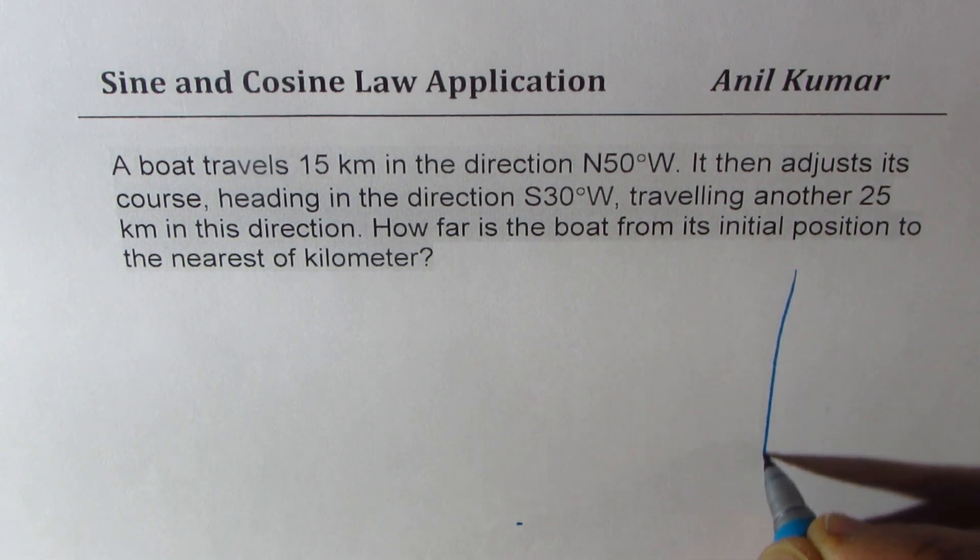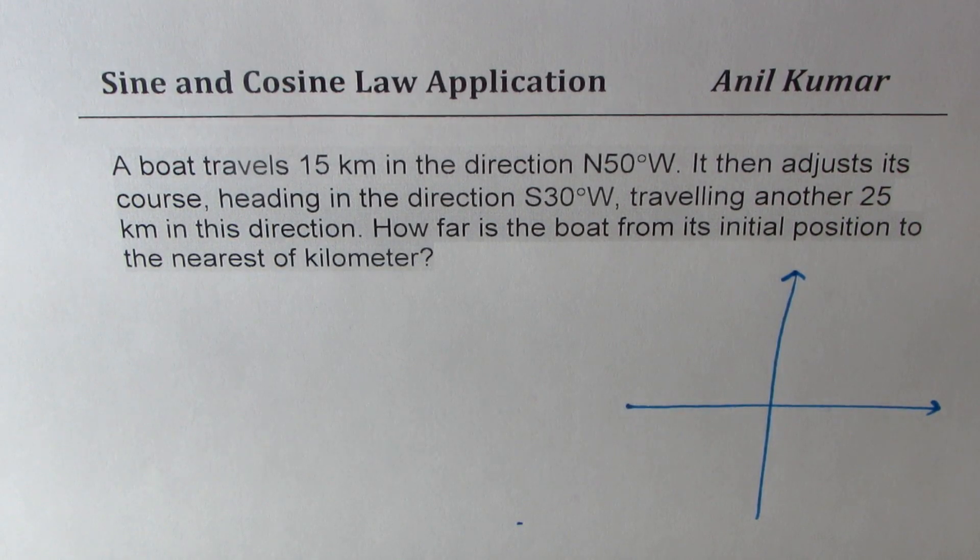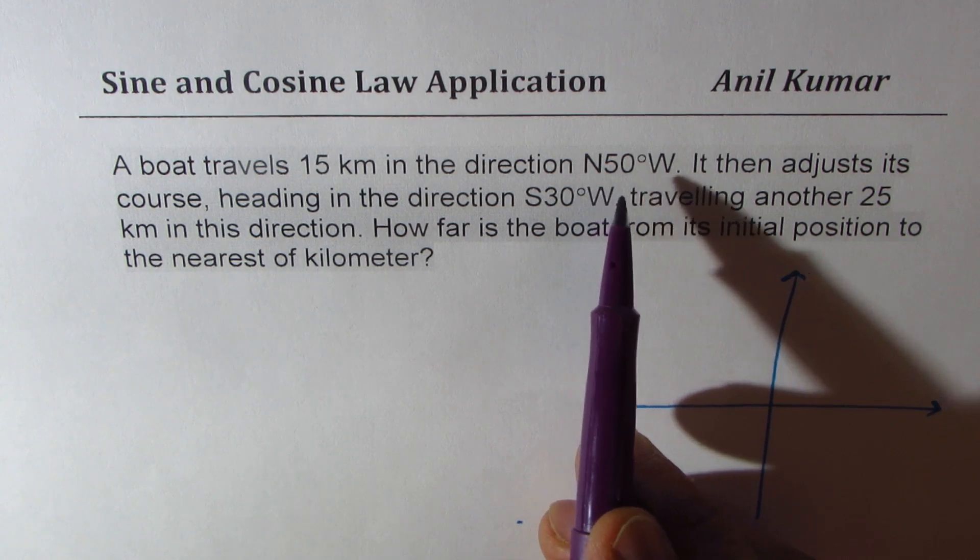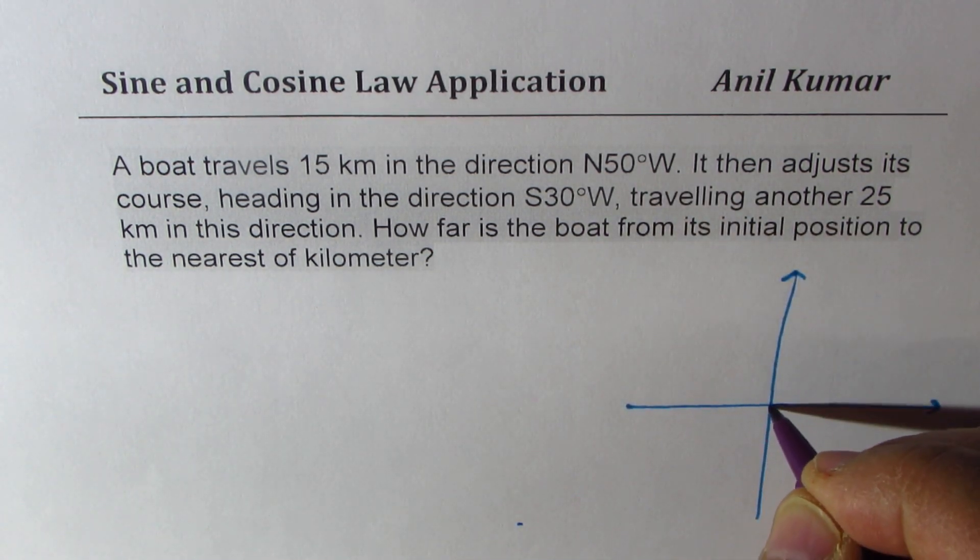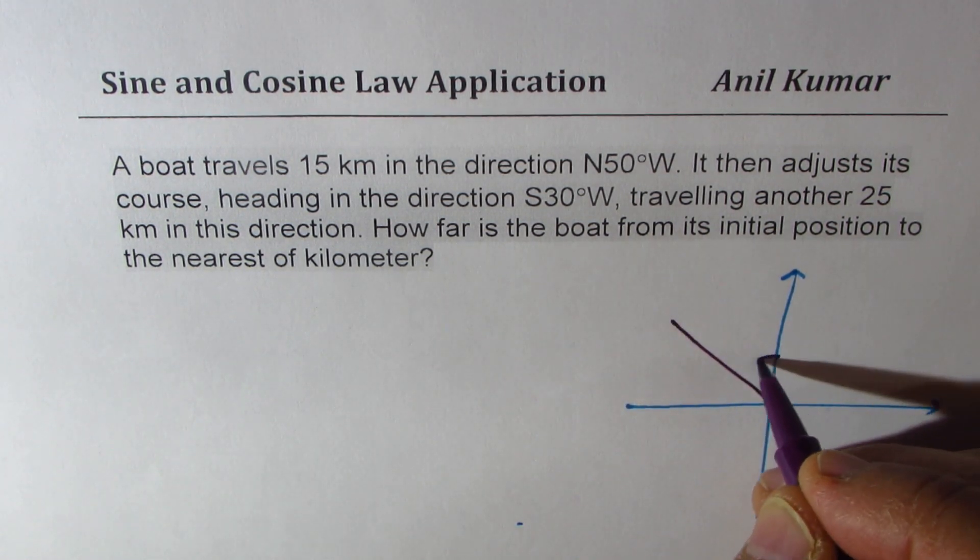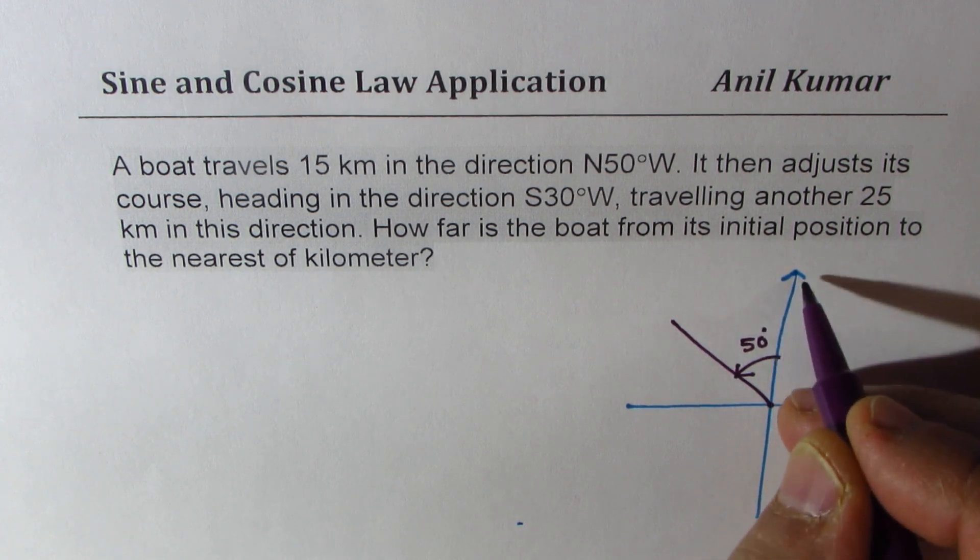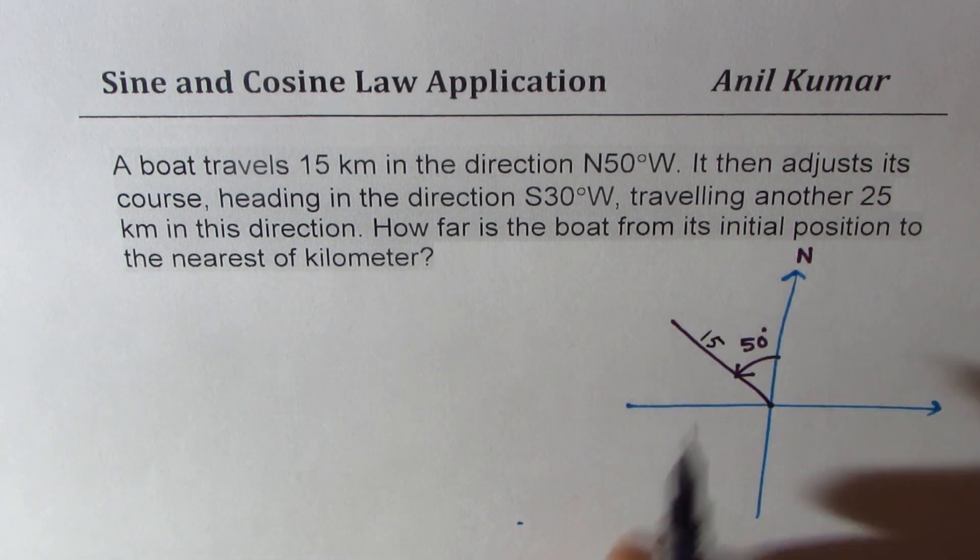Let's sketch the situation. We are learning how to sketch and find distance. 15 kilometers in the direction from north 50 degrees west. From north 50 degrees west will mean something like this. So this angle here will be 50 degrees from north, and the distance will be 15 kilometers.